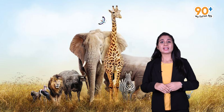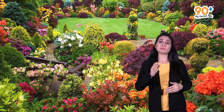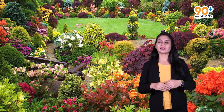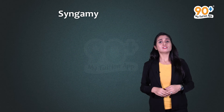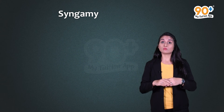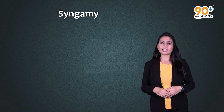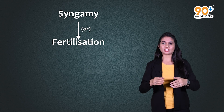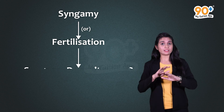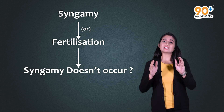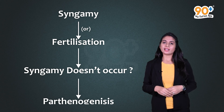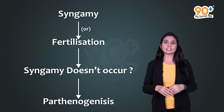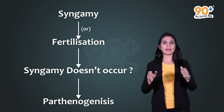In dioecious animals, male and female gametes are formed in different individuals, so a special process for gamete transfer is followed. The fusion of gametes is called syngamy, which leads to the formation of a diploid zygote. Syngamy and fertilization are often used interchangeably. When syngamy does not occur, the female gamete undergoes development without fertilization — this is called parthenogenesis.